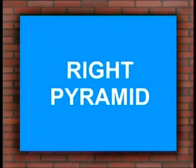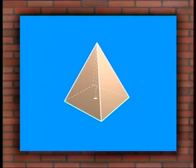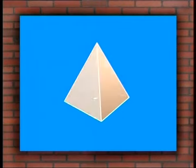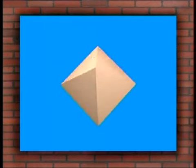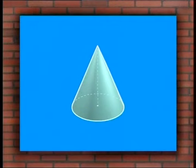For a right pyramid, the distance of the vertex from the center of its base is its height. The lateral faces are triangles and its base is a polygon. For a right circular cone, the distance of the vertex from the center of its base is its height. The diagram shows a right circular cone.